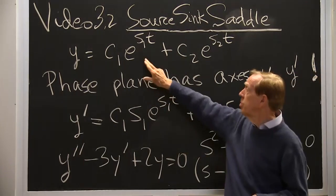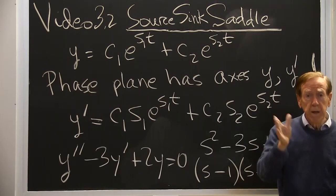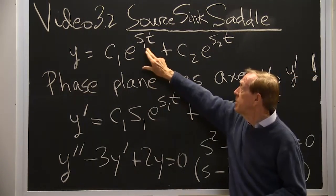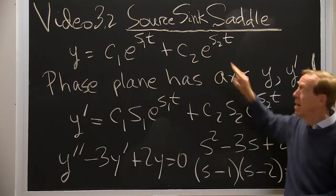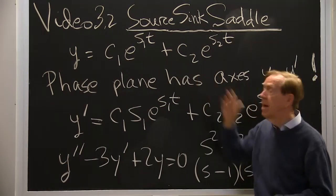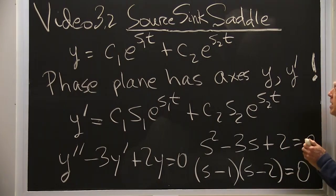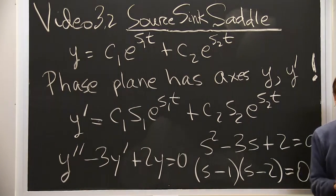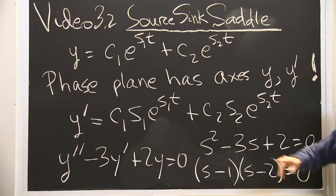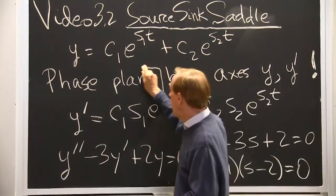We know that the solution has two special solutions, e to the s1t and e to the s2t. Two null solutions. Any combination is a null solution. So we're talking about null equations, zero on the right hand side. We want to draw the picture that goes with solutions like that. The magic word is phase plane.